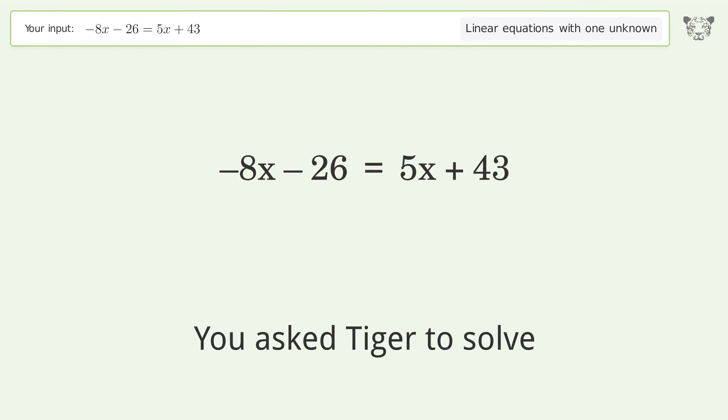You asked Tiger to solve this. This deals with linear equations with one unknown. The final result is x equals negative 69 over 13.